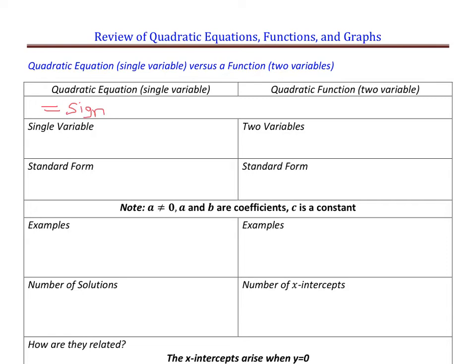Another thing they have in common is they have a polynomial with a degree of 2. A degree of a polynomial is the highest exponent, so they would have some kind of x squared term. That's in both. Single variable for a quadratic equation, generally x. For a two-variable quadratic function, the independent variable is x as input, and the dependent variable is y, or the output.